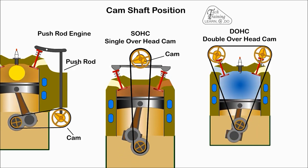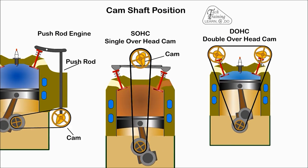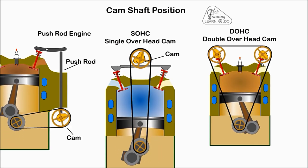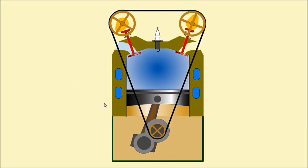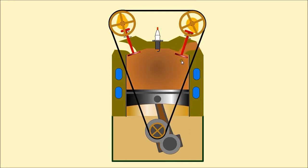With a non-interference engine, the valves do not extend into the path of the piston. If the timing belt breaks, it will not result in damaged valves. With an interference engine, the valves extend into the path of the piston. If the timing belt breaks, it will result in damage to the valves.